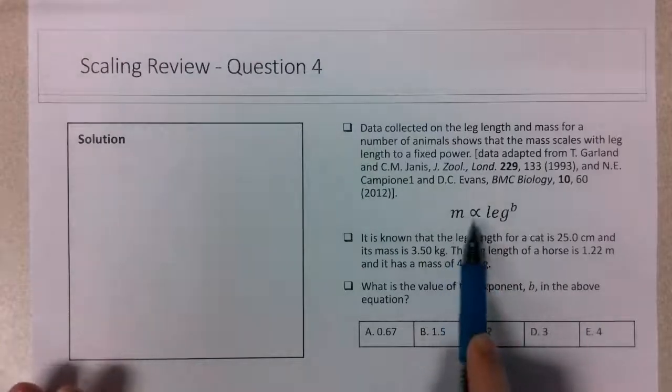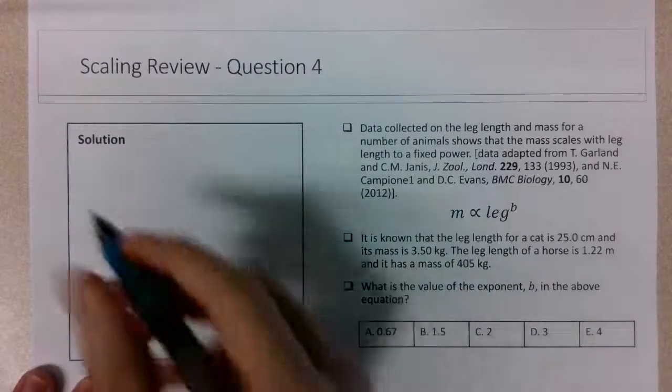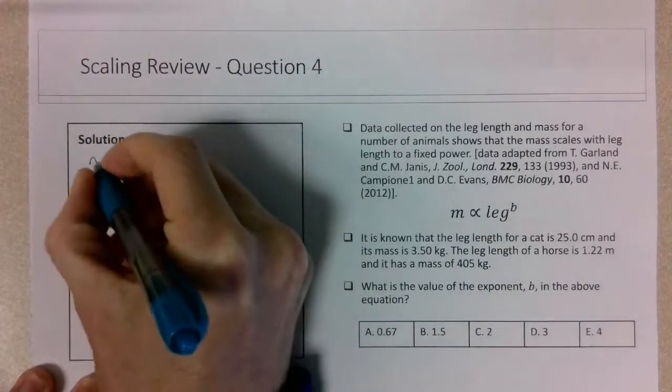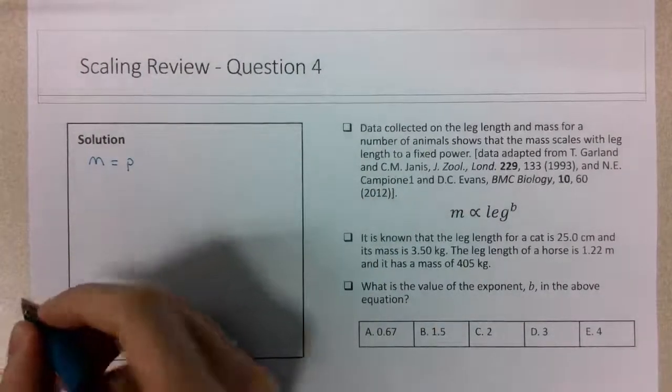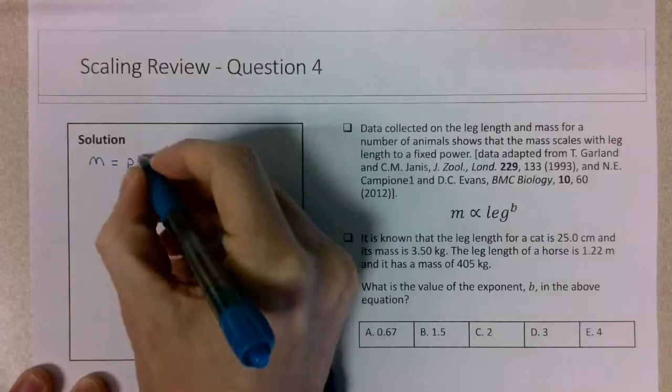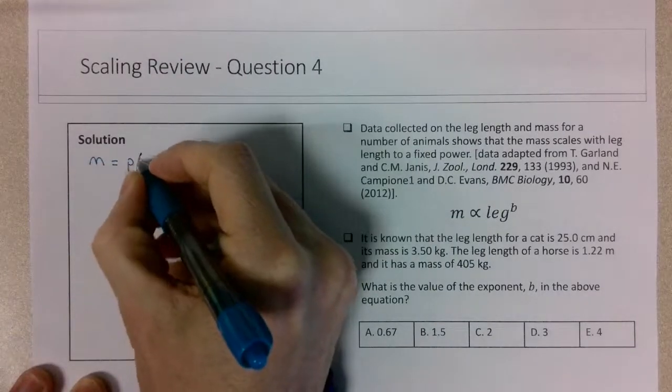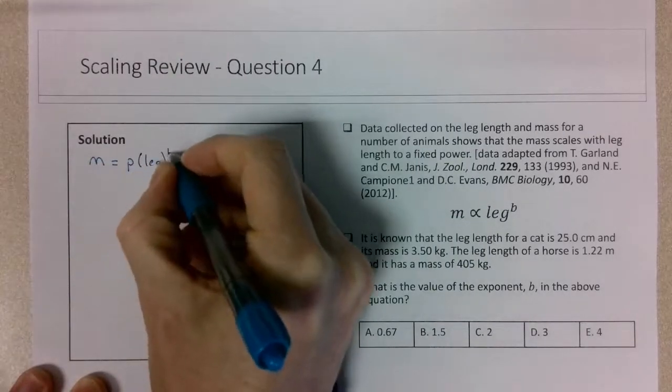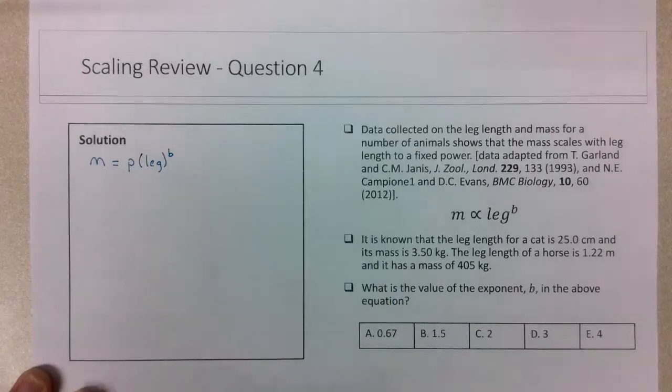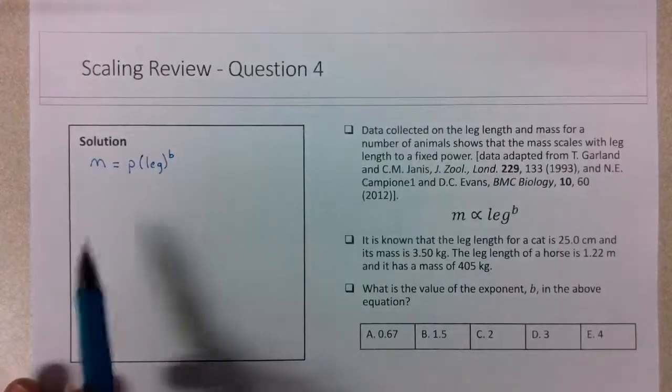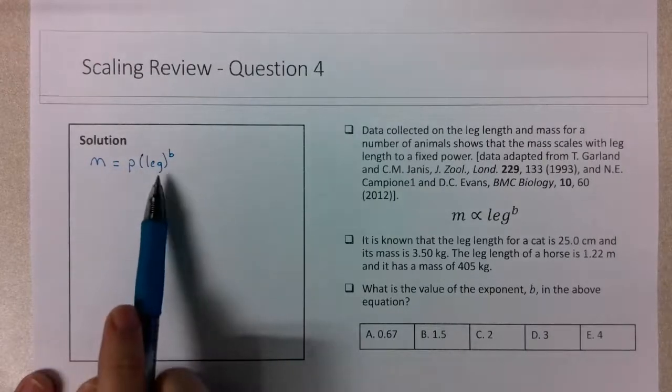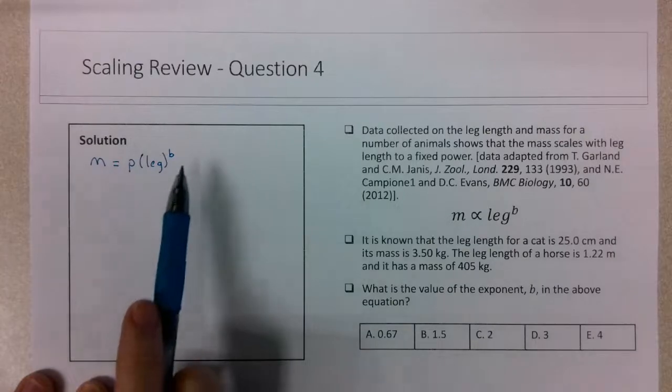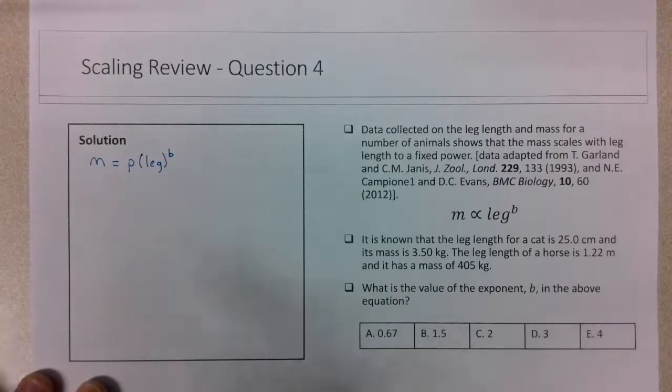Writing this as an equality rather than a proportionality, I can state that the mass is equal to some proportionality constant - I'll just use p - times the leg length raised to the power of b. If we know m and leg length for both cat and horse, we can set up a ratio and solve for b.